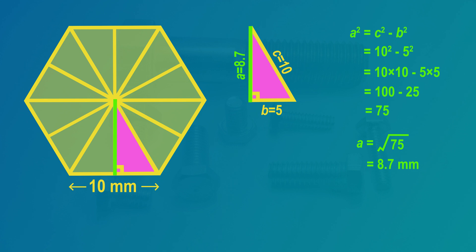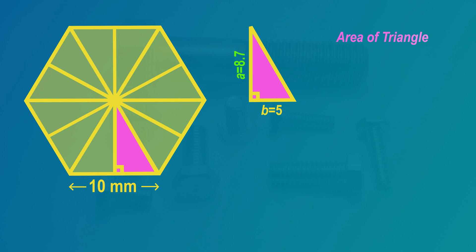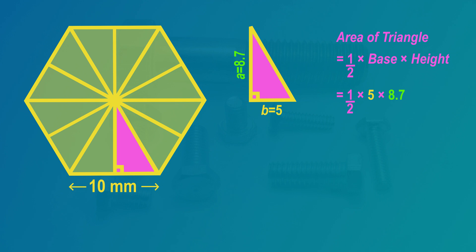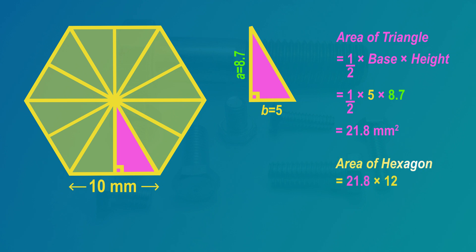Now we work out the area of one right angled triangle. The rule for the area of a triangle is one-half multiplied by the base multiplied by the perpendicular height. In this right angle triangle, that's one-half times 5 times 8.7. So the area of one right angled triangle is 21.8 square millimeters. There are 12 triangles, so the area of all 12 right angled triangles is 261.6 square millimeters.